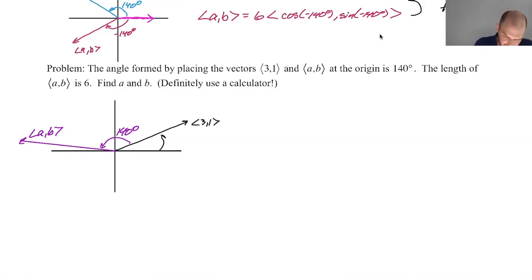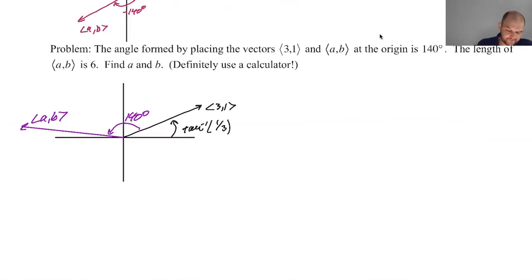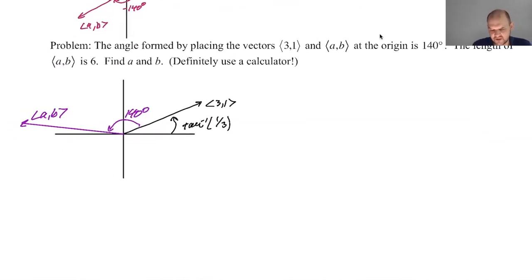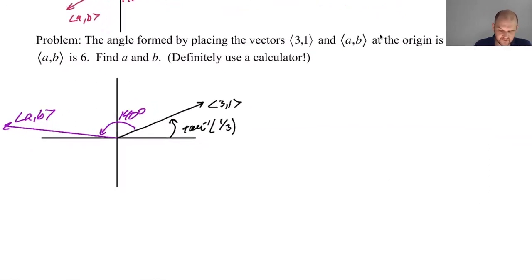Like I could find the direction angle for this. Like this is the arctan of one third. And then I could just do that. The direction angle is the arctan of one third plus 140 or the arctan of one third minus 140 multiplied by six. And it's like kind of done. I would prefer to do it a different way, but that would work. So like check that and see if it works. In fact, I'll do it on the calculator in a minute and see if it did work. I'm going to do something a little different. I'm going to say, I know the angle between them, right?